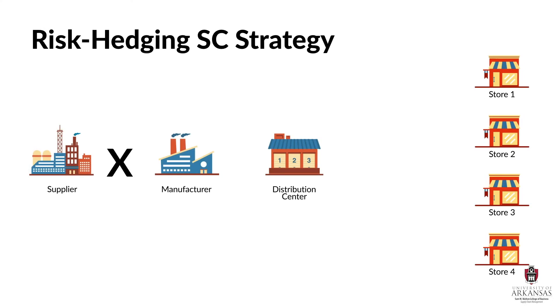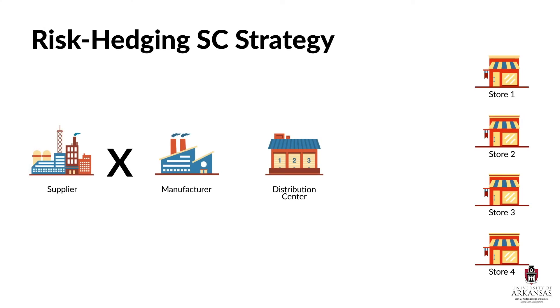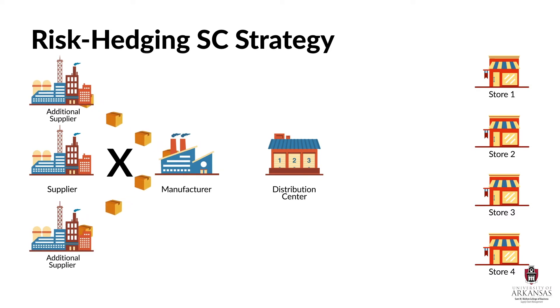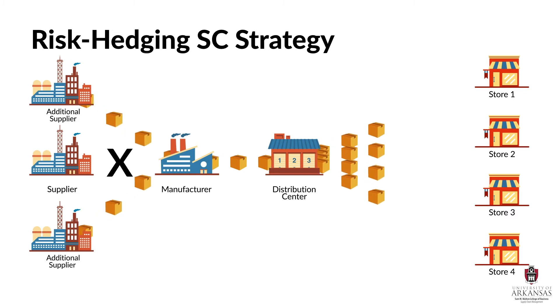So what should a supply chain manager do? When a supplier continually causes supply disruptions, then a risk hedging strategy is appropriate. With this strategy, supply chain managers could seek out multiple sources of supply to spread out the risk and minimize supply disruptions. Although one supplier may have a delivery issue for a few days, it's much less likely that three suppliers would all experience a problem at the same time.